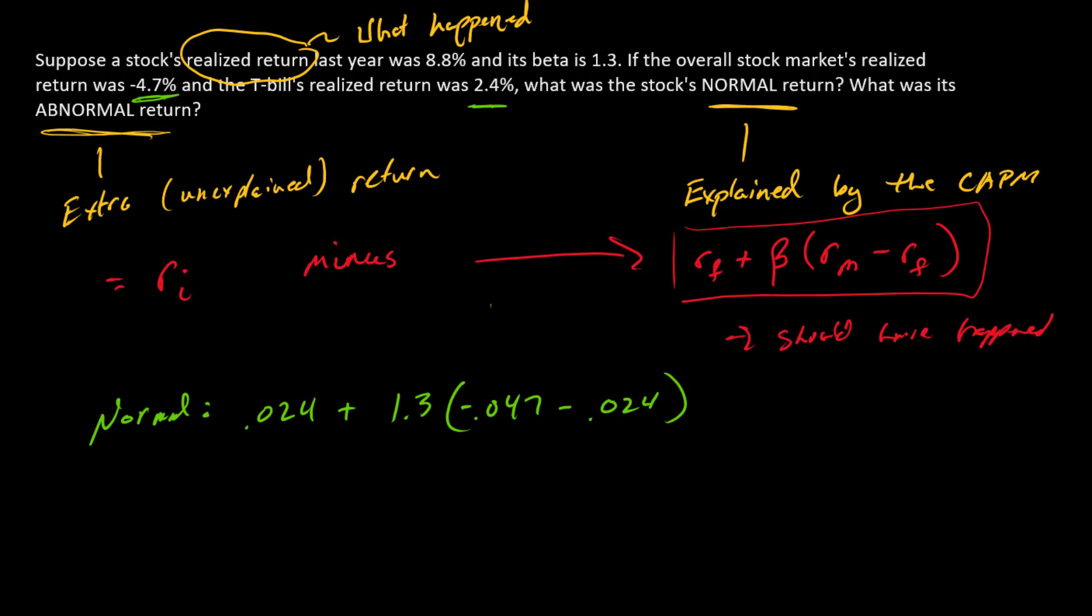Now recognize this was a very bad year for the market, right, a big negative return. And so since this is a positive beta stock, we expect or we could explain a negative return for the stock as something that's attributable to the market. So this normal return is going to be some negative number.